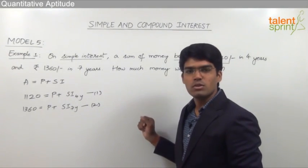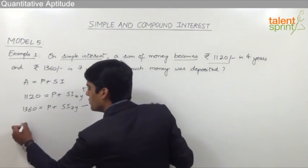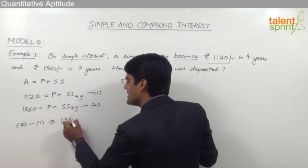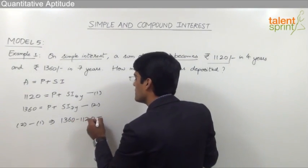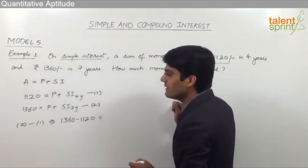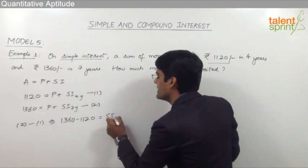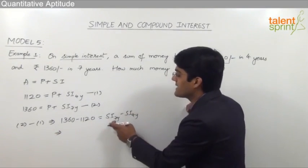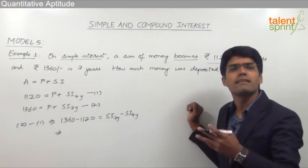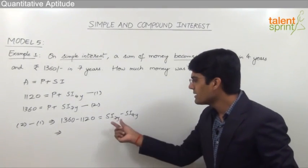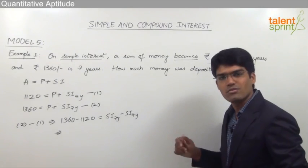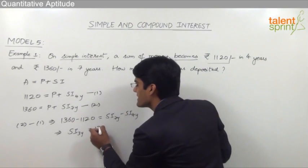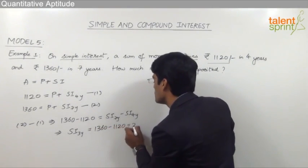Now by finding the difference of these two equations — equation 2 minus equation 1 — we get 1360 minus 1120. The principal cancels out, leaving simple interest of 7 years minus simple interest of 4 years, which is simple interest of 3 years. That is, 7 years' interest minus 4 years' interest gives us the interest for 3 years.